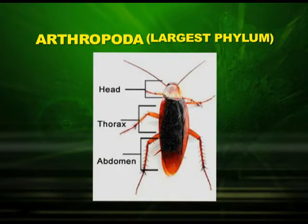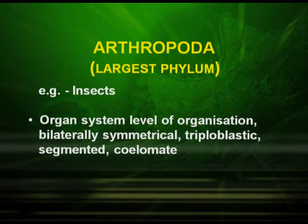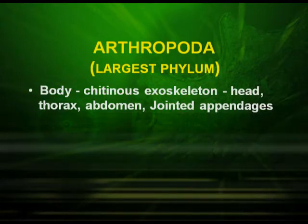The next phylum is Arthropoda. This is the largest phylum in animal kingdom and we find different forms. All the insects come under Arthropoda. They have organ system level of organization. They are bilaterally symmetrical, triploblastic organisms with three germinal layers, segmented, coelomate with presence of true body cavity. Their body is made up of a chitinous exoskeleton.